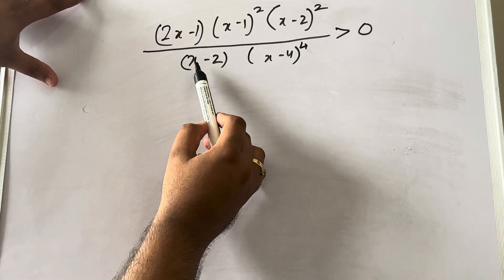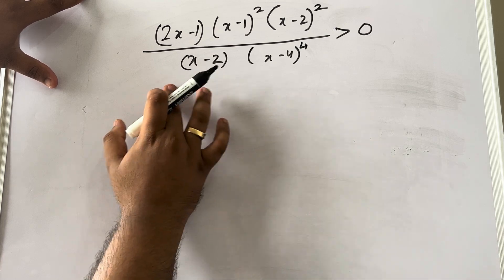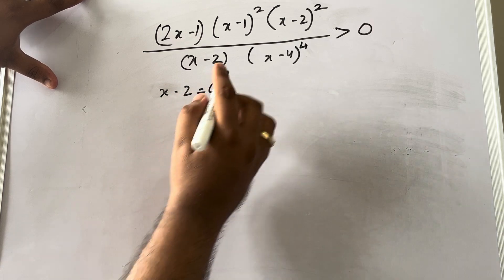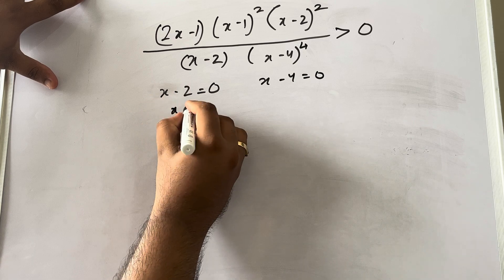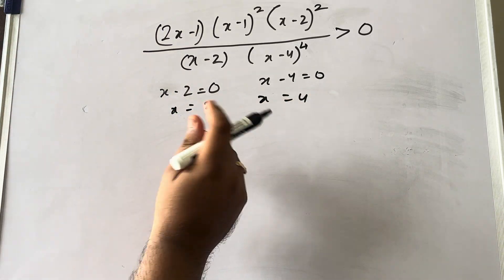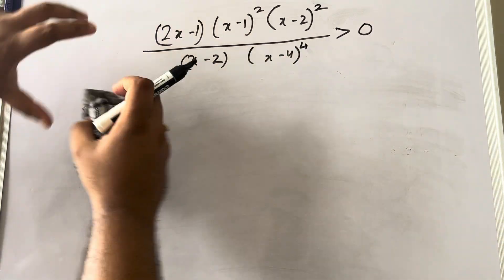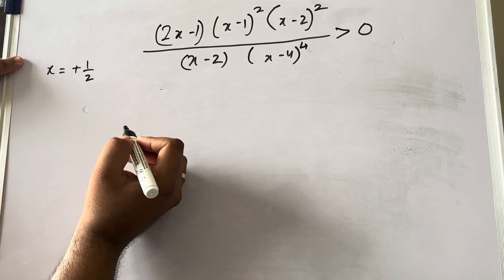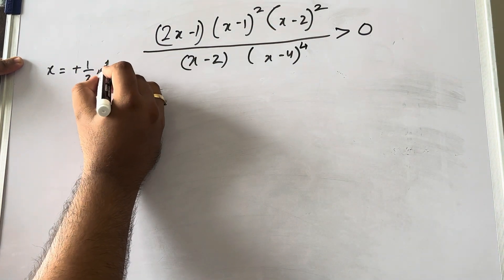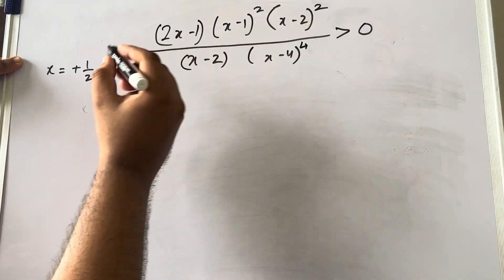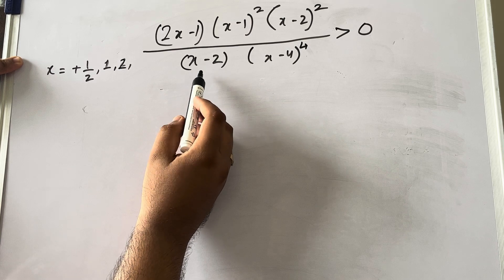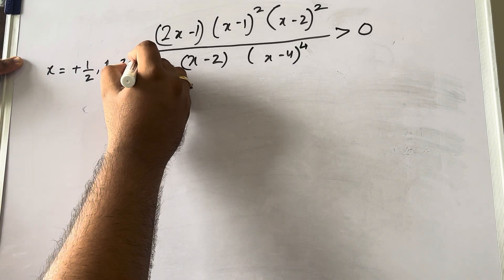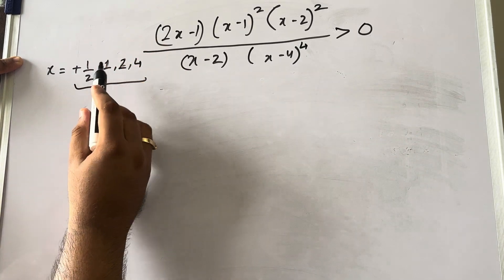So here you have something in the denominator as well. Finding the critical points: x − 2 = 0 gives x = 2; x − 4 = 0 gives x = 4. From the numerator: 2x − 1 = 0 gives x = 1/2; x − 1 = 0 gives x = 1; x − 2 = 0 gives x = 2; x − 4 = 0 gives x = 4. So the critical points are 1/2, 1, 2, and 4.